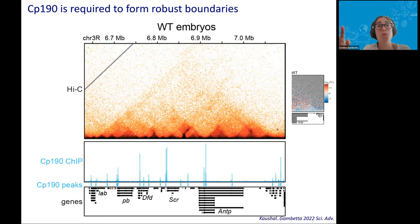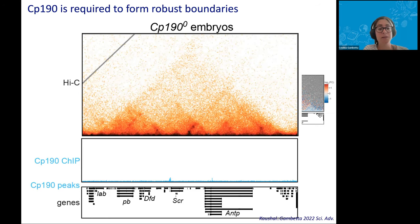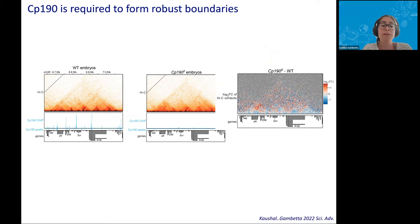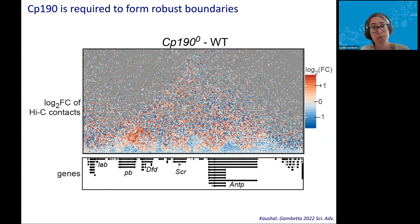This is a HiC map in wild-type embryos looking at a Hox gene cluster called the Antennapedia cluster. You can see that these Hox genes are organized into contact domains, and that CP190 binds at the boundaries of these domains. In CP190 mutants, some contact domain boundaries have disappeared and others have become fuzzy, and CP190 is no longer detectable — we only see some nonspecific signals in the ChIP. Subtracting the wild-type HiC map from the CP190 mutant HiC map highlights increased inter-domain contacts visible in red between domains in the mutants. CP190 is therefore required to form robust boundaries at this locus — but what about genome-wide?